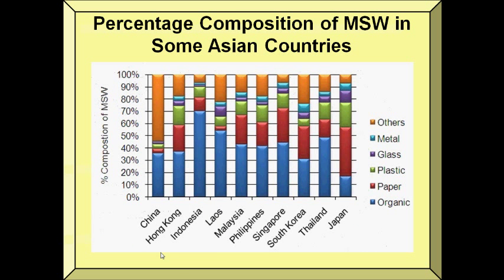Here is another graph showing the percentage composition of municipal solid waste in some Asian countries. In the Philippines, 41.1% of each waste is composed of organic materials, 20% are papers, 14% are plastic, 2% are glass, and 5% are metals, while the remaining 18% are other materials.